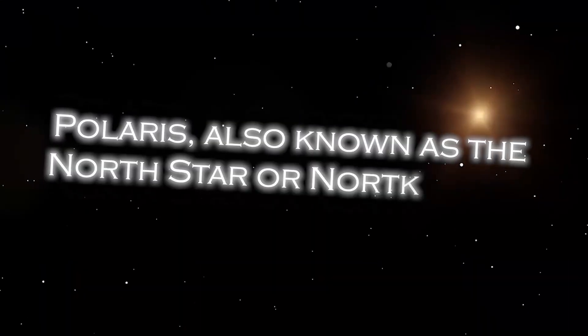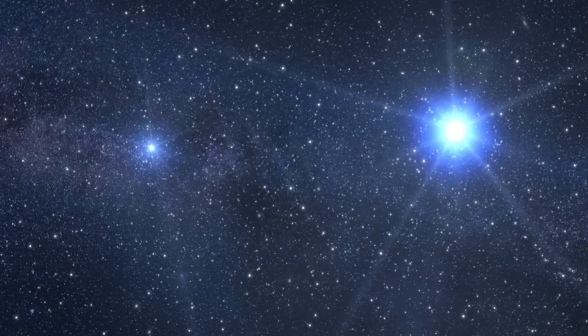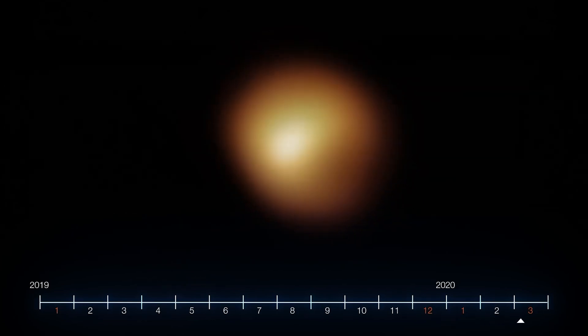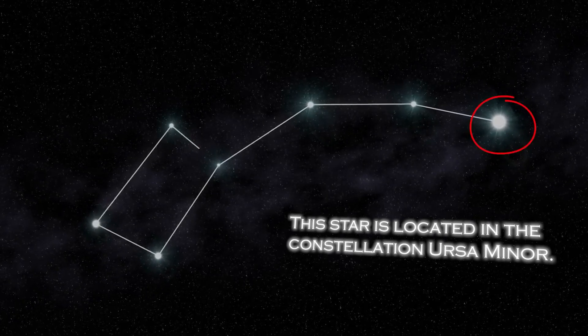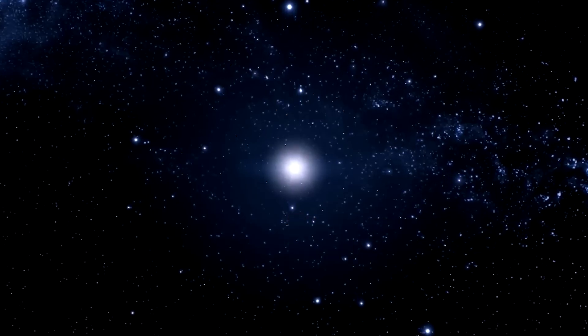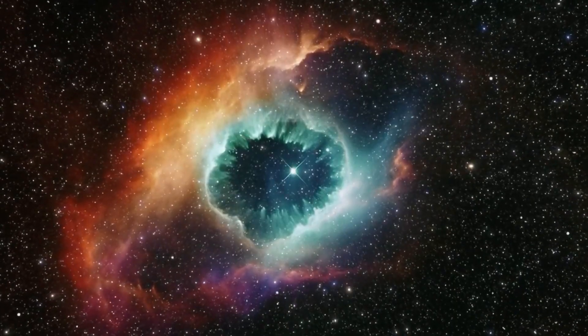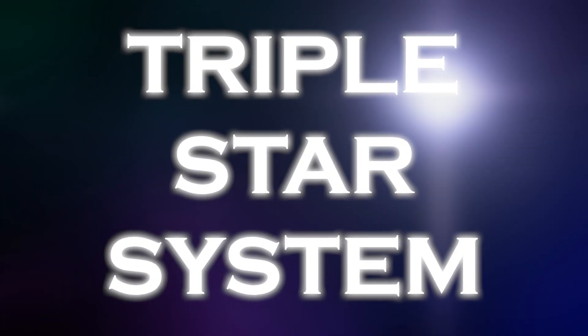Polaris, also known as the North Star, occupies a special position in the sky because of its proximity to the celestial North Pole. It is almost directly over the Earth's North Pole, which gives the illusion that it remains static in the northern sky. The star is located in the constellation Ursa Minor. Polaris is a star of moderate brightness that stands out as a yellow-white supergiant of considerable dimension compared to our Sun. Despite its appearance as a lone star, it is actually part of a rather complex triple star system.